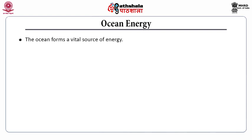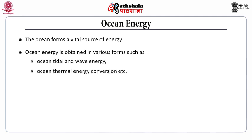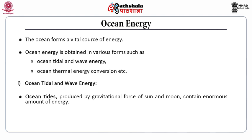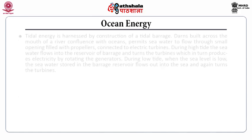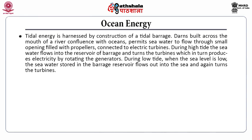Ocean energy: the ocean forms a vital source of energy, obtained in various forms such as ocean tidal and wave energy and Ocean Thermal Energy Conversion (OTEC). Ocean tides are produced by the gravitational force of the sun and moon and contain enormous amounts of energy. High tide and low tide refer to the rise and fall of water in the ocean respectively. Tidal energy is harnessed by construction of a tidal barrage — dams built across the mouth of a river's confluence with oceans, permitting seawater to flow through small openings filled with propellers connected to electric turbines. During high tide, seawater flows into the barrage reservoir and turns the turbines, producing electricity. During low tide, the stored seawater flows back out and again turns the turbines.